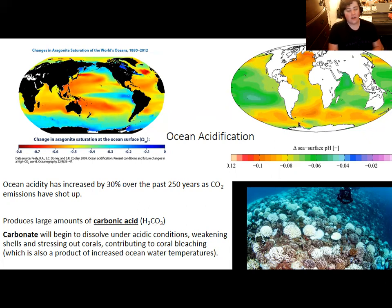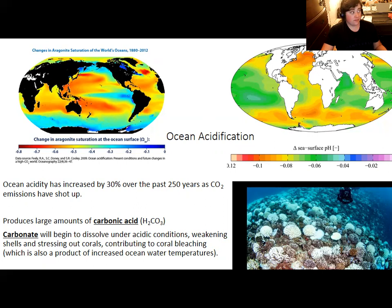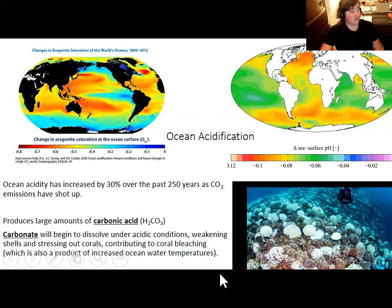Coral bleaching occurs when corals release the algae they depend on. Corals need algae to survive and will expel algae when under great stress, kind of as a last resort. They'll let algae grow back if they recover, but if corals stay under stress for a long time, they will die — they lose their color from the loss of algae and they die. This is particularly concerning because coral reefs are really important biologically. They support fisheries and many species, and dead coral reefs mean a lot of dead fish.